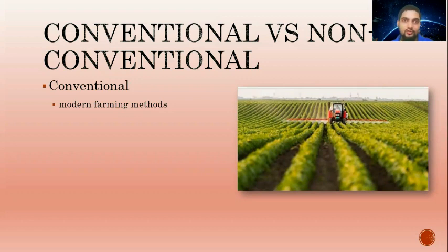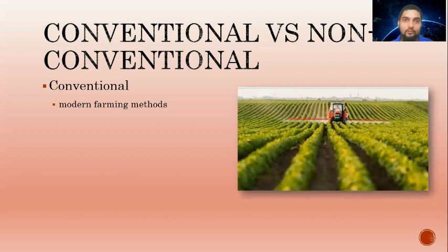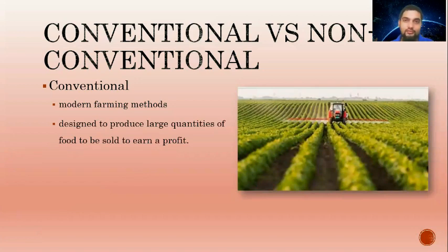A few hundred years ago, our population remained relatively stable — around 1 billion human beings living on earth. Today, we have over 7 billion persons living on earth. Therefore, the way in which farming was done had to be changed. Conventional farming is a modern farming method that was used to meet the demands of the growing population. It was designed to produce large quantities of food, and of course, it was done to earn a profit.